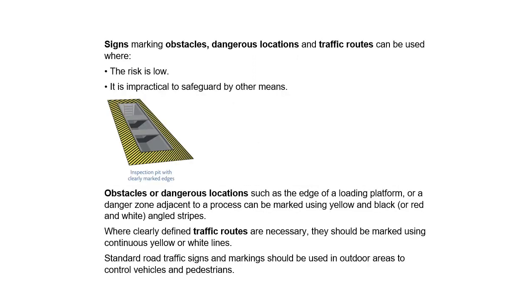Signs marking obstacles, dangerous locations, and traffic routes can be used where the risk is low and it is impractical to safeguard by other means. Obstacles or dangerous locations such as the edge of a loading platform or a danger zone adjacent to a process can be marked using yellow and black or red and white angled stripes. Where clearly defined traffic routes are necessary, they should be marked using continuous yellow or white lines. Standard road traffic signs and markings should be used in outdoor areas to control vehicles and pedestrians.